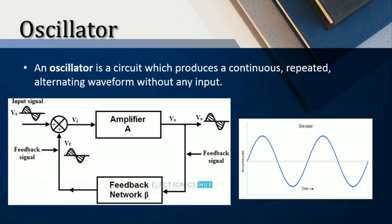The first topic is: what is an oscillator? An oscillator is a circuit that produces a continuous or repeated alternating waveform without any input. It is an electronic circuit that produces an oscillating output — you will have a continuous sinusoidal output at the output port, with continuous oscillations at the output node.